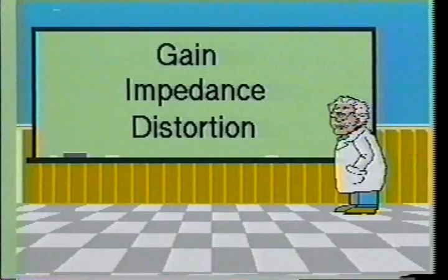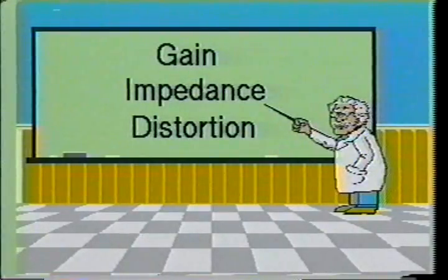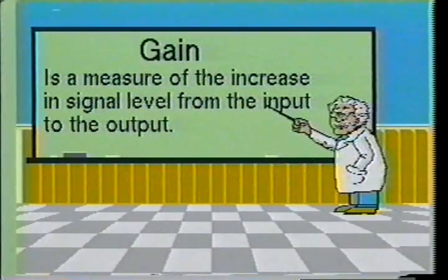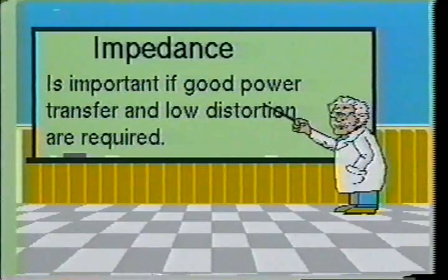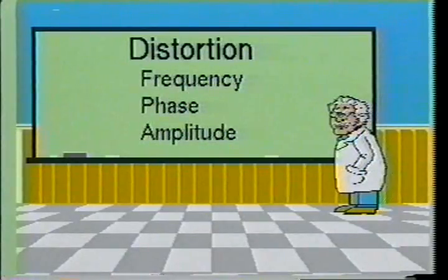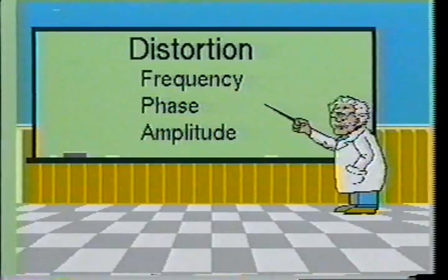The characteristics of an amplifier may be described in terms of a few basic parameters: gain, impedance, and distortion. The gain of a circuit is a measure of the increase in signal level from the input to the output. The input and output impedance of an amplifier must be matched to the connecting circuits if good power transfer and low distortion are desired. There are three basic types of distortion which may occur in an amplifier circuit: frequency distortion, phase distortion, and amplitude distortion.